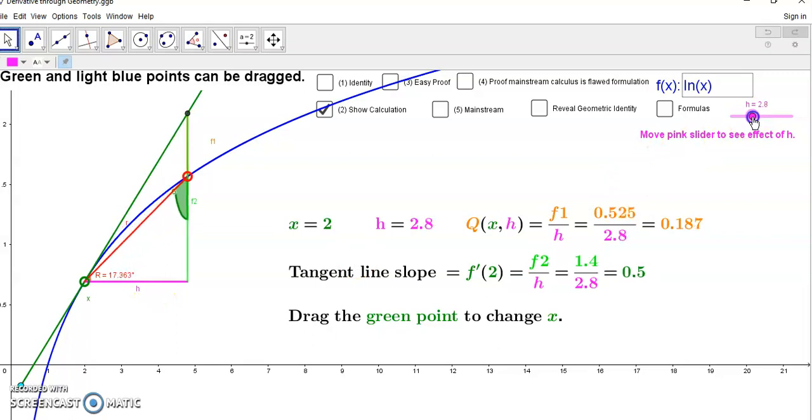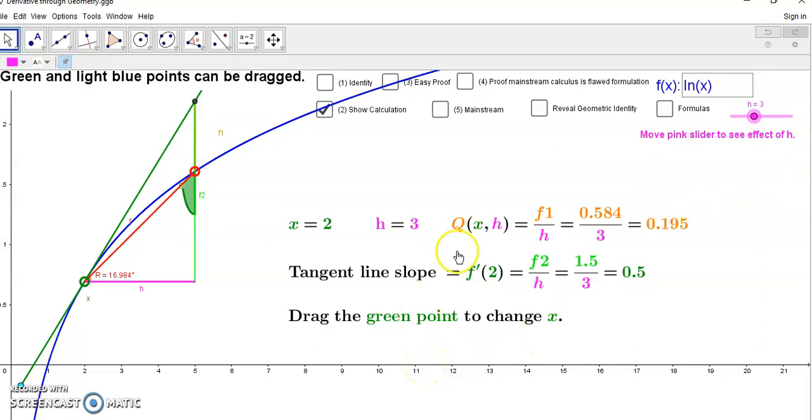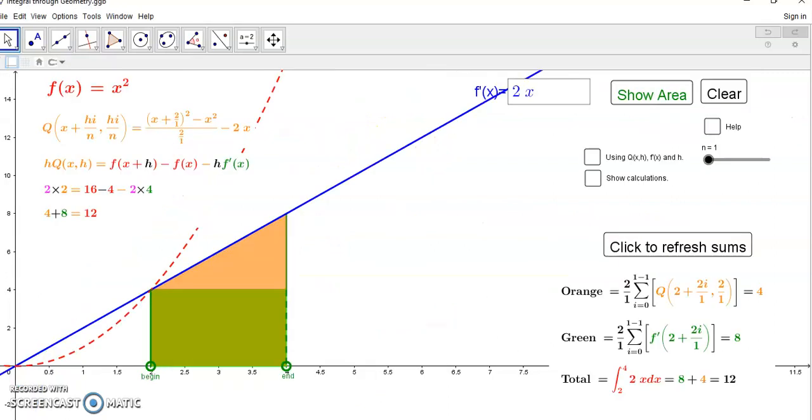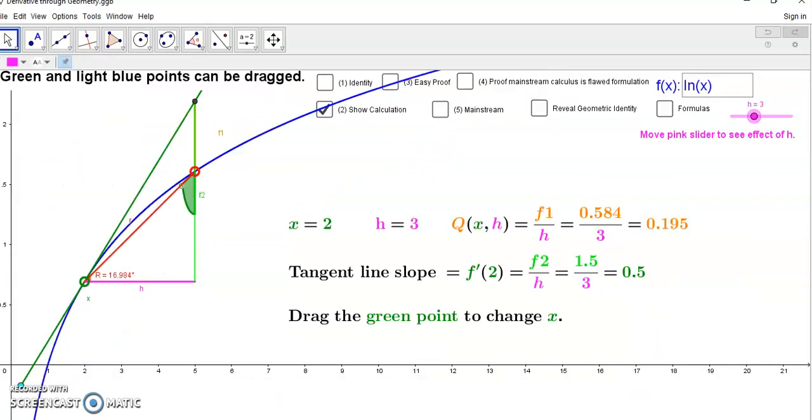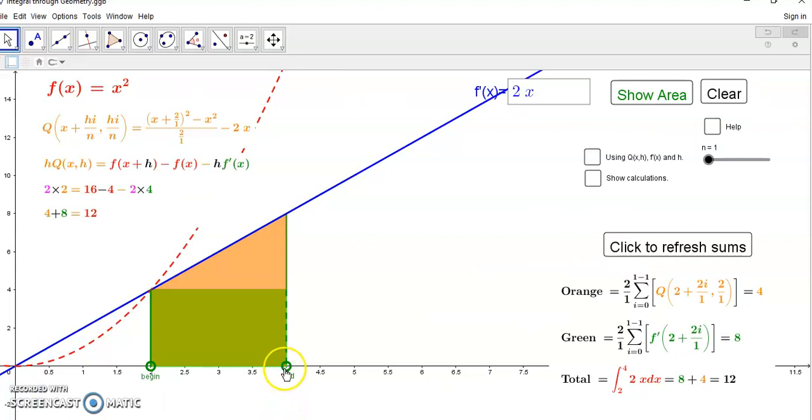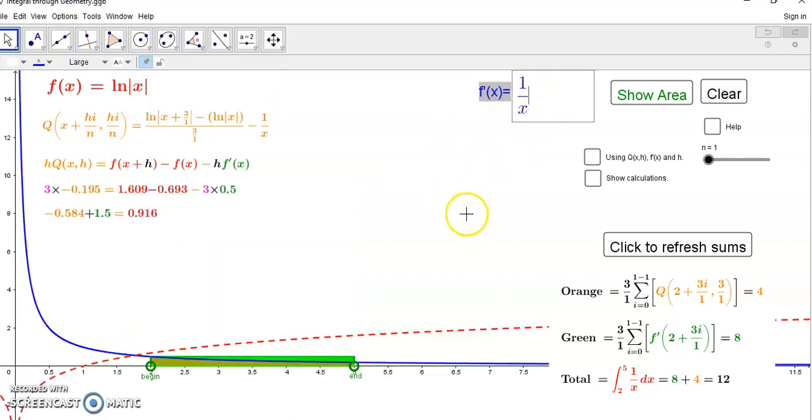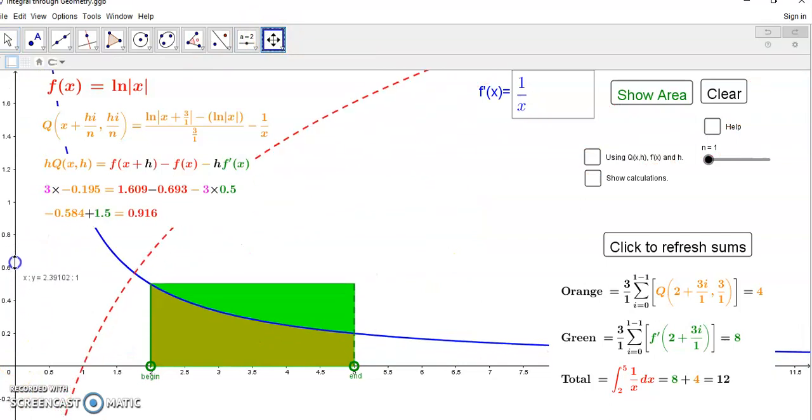Let's be a little adventurous and make that 3 like so. We're going to now see what this looks like for the definite integral from 2 to 5. We know the derivative is one over x from the identity.